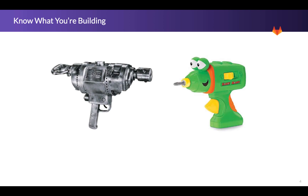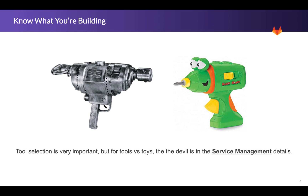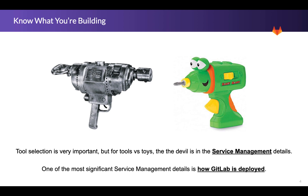You've got to know what you're building from the get-go. I'd like to draw a contrast between production-grade tooling versus toys. Tooling selection is really important, but for tools versus toys, the devil is in the service management details. Think of the go-to joke: someone says, 'Hey, we got new CI going, it's pushing stuff to all our clouds.' And you ask where it's deployed. 'Oh, it's under Larry's desk on an old 386 machine from 20 years ago.' Even when you move that tooling into the cloud, that alone isn't enough to make it a production-grade service. One of the most significant aspects of service management is how GitLab itself is deployed.